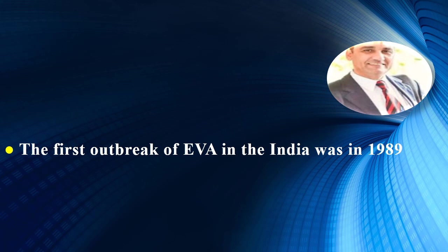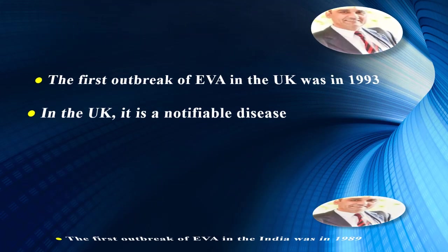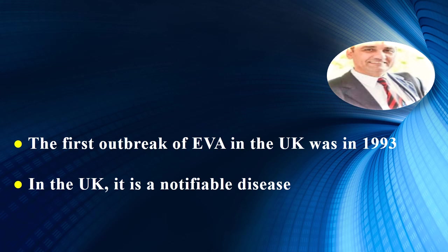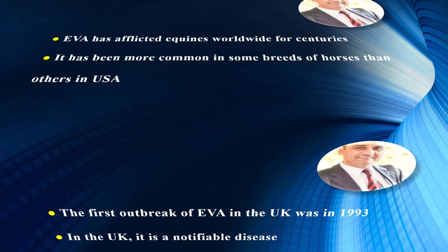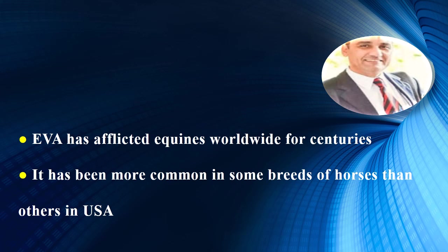The first outbreak of equine viral arthritis reported in India was in 1989. The first outbreak in the United Kingdom was reported in 1993, affecting six premises with around 100 horses infected. Further spread of the virus was prevented by movement restriction. In the United Kingdom, equine viral arthritis is a notifiable disease. The disease has afflicted equines worldwide for centuries and has been more common in some breeds of horses than others in the United States.